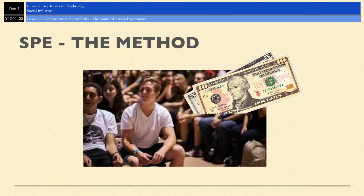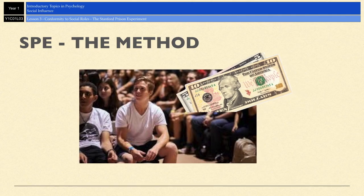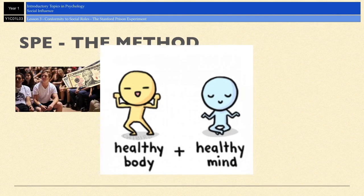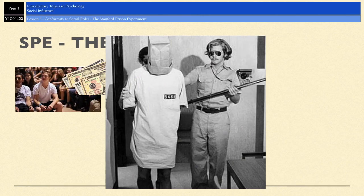Zimbardo's sample consisted of 21 male university students who volunteered by responding to a newspaper advert. There were 75 volunteers, and the 21 who eventually took part were chosen based on their physical and mental stability. They were paid $15 a day to take part, and each participant was randomly assigned to a role — either prisoner or prison guard.